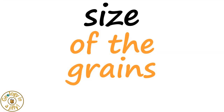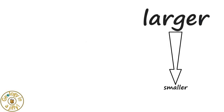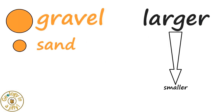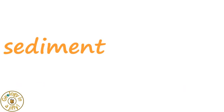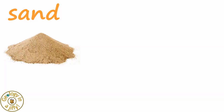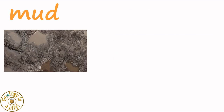One way to sort these is by the size of the grains in the rocks, which going from largest down to smallest, we have gravel, sand, silt and clay, which need a hand lens or microscope to see them. These sediments help name the sedimentary rock — for example, sand makes sandstone, and mud makes mudstone.